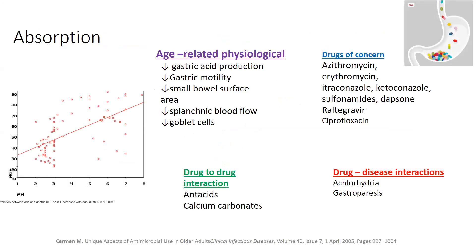Starting with absorption — as we age, there's a decrease in gastric acid production, decreased gastric motility, decreased small bowel surface area, and a decrease in splanchnic blood flow. These changes have not been deemed of great clinical importance for antibiotic dosing in the elderly. However, drug-to-drug interactions such as the use of antacids or calcium carbonates, or drug-to-disease interactions like achlorhydria — which is more prevalent in the elderly — can affect the bioavailability of antibiotics such as azithromycin and clarithromycin.